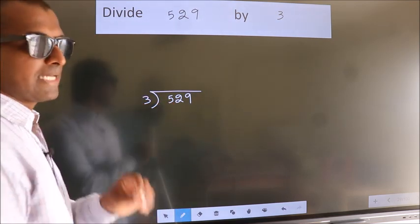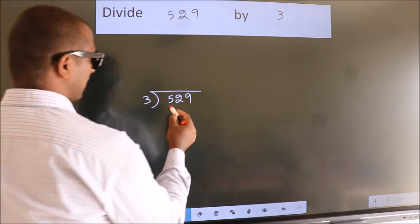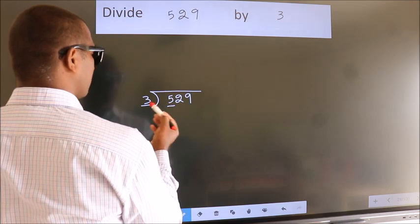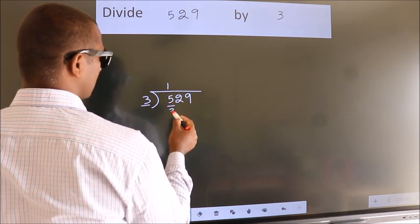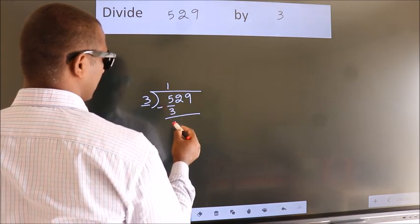This is your step 1. Next, here we have 5, here 3. A number close to 5 in 3 table is 3 1s 3. Now, we should subtract, we get 2.